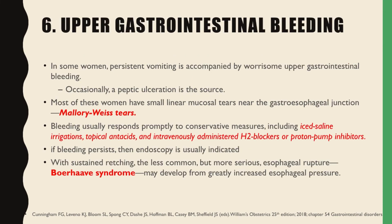Next, we have upper GI bleeding. In some women, persistent vomiting is accompanied by worrisome upper GI bleeding, and occasionally a peptic ulceration is the source. Most of these women have small linear mucosal tears near the gastroesophageal junction — what we call Mallory-Weiss tears. Bleeding usually responds promptly to conservative measures including iced saline irrigations, topical antacids, and intravenously administered H2 blockers or proton pump inhibitors. If bleeding persists, endoscopy is usually indicated. With sustained retching, the less common but more serious esophageal rupture — Boerhaave syndrome — may develop from greatly increased esophageal pressure.